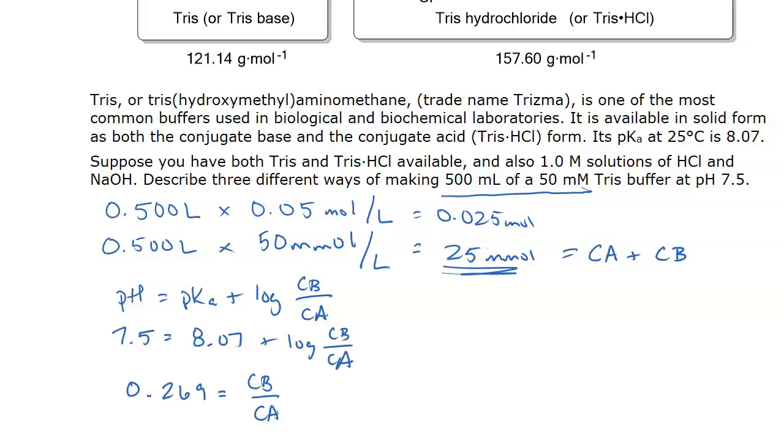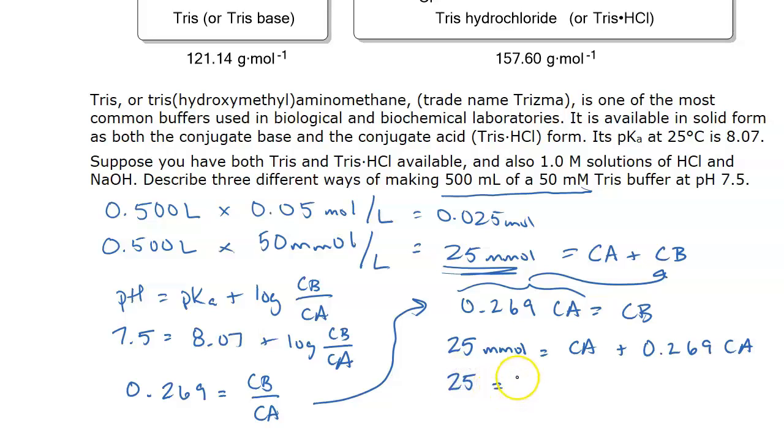So now you can solve those. So let's go ahead and do that. I'm going to just move this right up here and say that 0.269 times the conjugate acid equals the conjugate base. Now I'm going to plug this in for the conjugate base. So 25 millimoles is equal to 1.269 conjugate acid. And then take 25 divided by that last number, which I've kept in my calculator. And I get 19.70. And that's in millimoles.